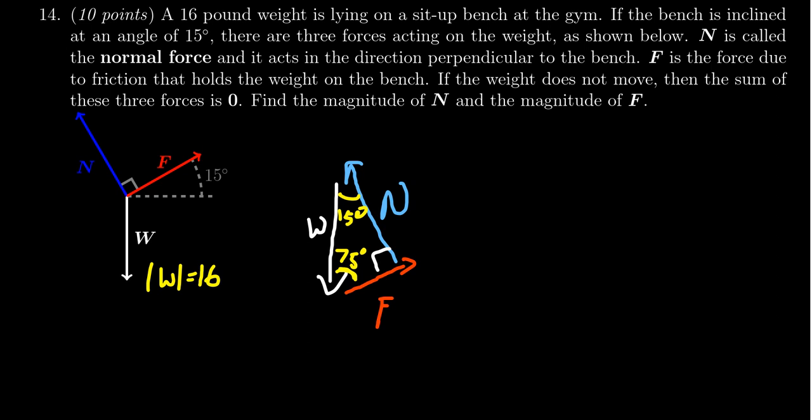We have a 15-75-90 triangle. We need to find the sides. The hypotenuse is 16. We'll use a sine or cosine ratio to figure out the others. Let's do the frictional force first. We'll work with the 15 degree angle. With respect to this angle,